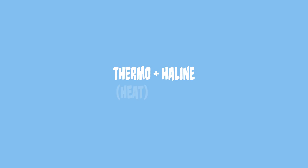Thermo comes from the Greek word for heat and haline refers to salt. Therefore, the circulation in the deep ocean is caused by the varying temperatures and salinities of the water and how these two properties affect its density. Similar to air masses, which have temperature and humidity signatures, water masses have temperature and salinity signatures. This means that temperature and salinity can be used to identify and to follow water masses as they circulate.